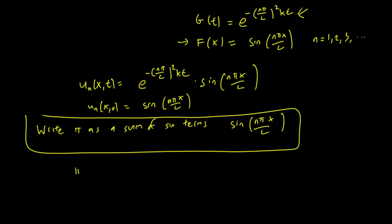So pi is equal to sum n equals zero to infinity b_n sine(n pi x over L). This is by Fourier's theorem. It says that any function can be written in this form and now we just need to find out what the b_n are.